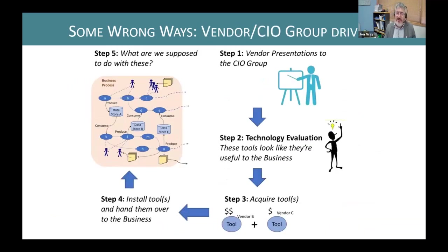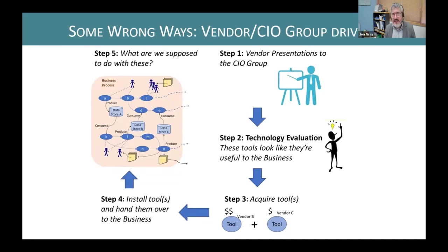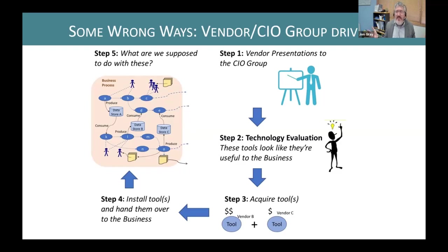Another not-so-good way is what I call the vendor or CIO group driven approach. The CIO group invites in a bunch of vendors, they do presentations, and the CIO or delegate decides these tools look pretty useful and will really help the business. So they buy the tools and hand them over to a business area, which then asks: 'What are we supposed to do with these?' We've seen this happen before — it's not so good.